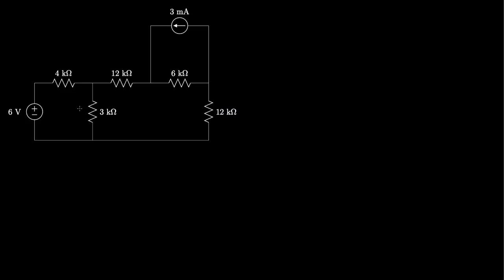To apply the node voltage method, we begin by identifying all of the nodes in this circuit that connect three or more elements. Here's one, here is one, there, and there.